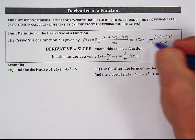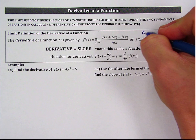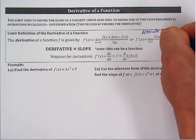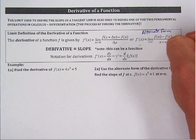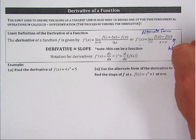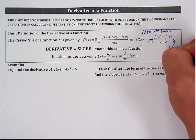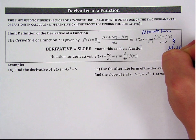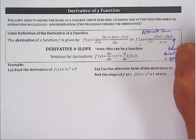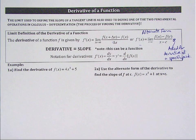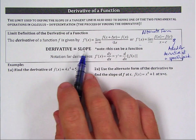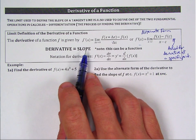The alternate form of the derivative is used when asked for slope or derivative at a specific point. Derivative equals slope — we're going to equate those two from here on out.